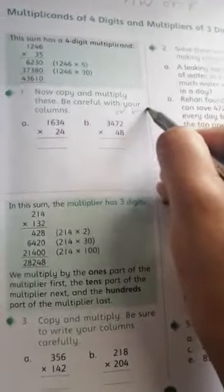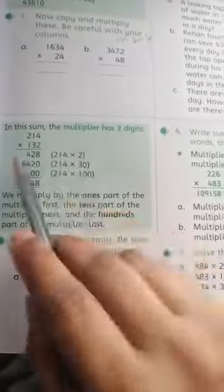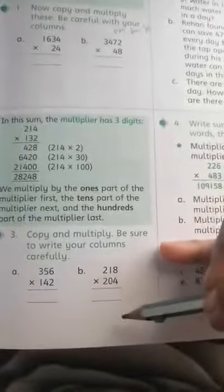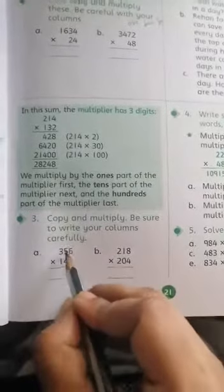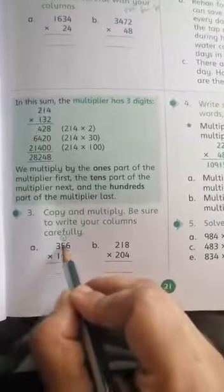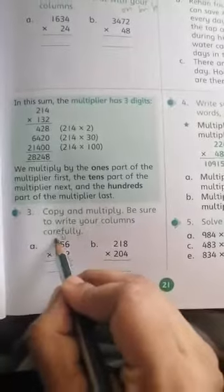In this sum, the multiplier has three digits. That is very easy. I can show you now. 426 times 112: 2 times 6 is 12, 1 is carry. 2 times 5 is 10 plus 1 is 11, 1 is carry.